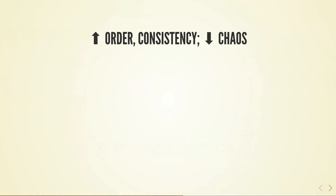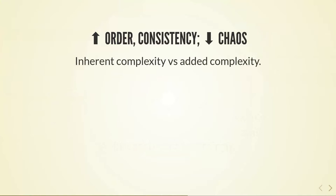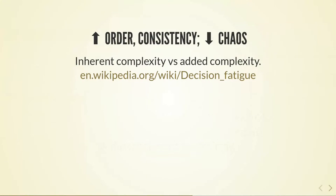The other way that helps quite a lot is to increase order and consistency and decrease chaos in whatever you're doing. There's some inherent complexity to the tasks that you're doing that you cannot remove, but there is often also some added complexity which comes from doing things suboptimally — from inconsistencies, doing chores manually that should have been automated, and just generally not being organized enough.